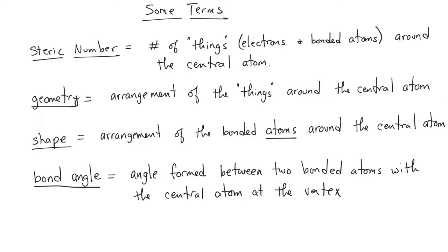The bond angle is the angle formed between two bonded atoms with the central atom at the vertex. For example, if we were to measure the bond angle of a water molecule, we would be considering the HOH bond angle — the angle formed between the connection of the two hydrogens with the oxygen atom. In that case, the oxygen is the atom at the vertex.